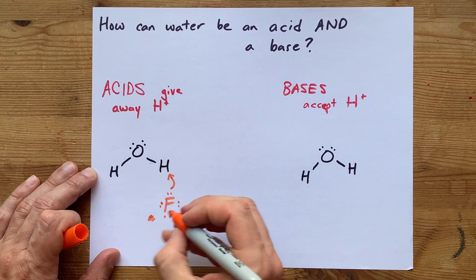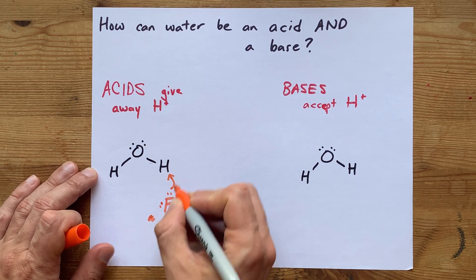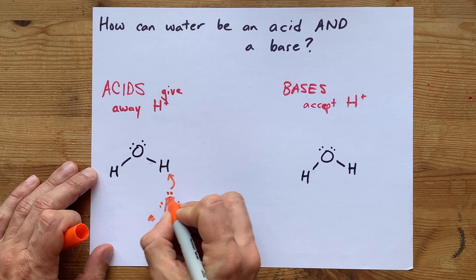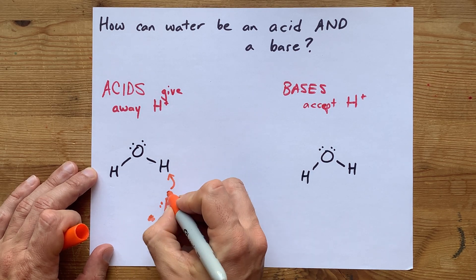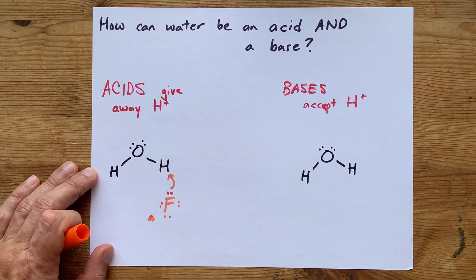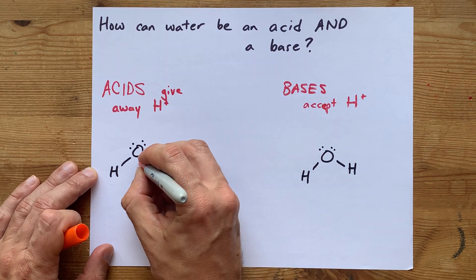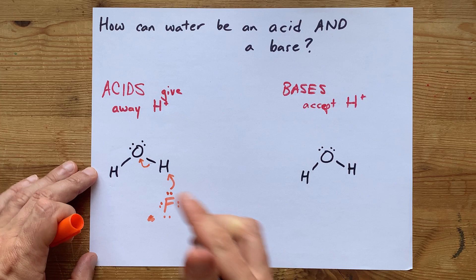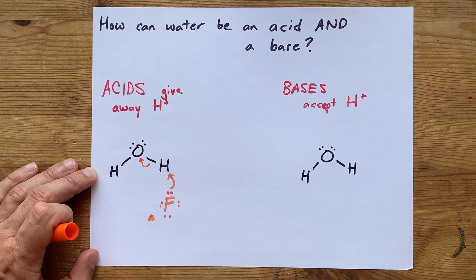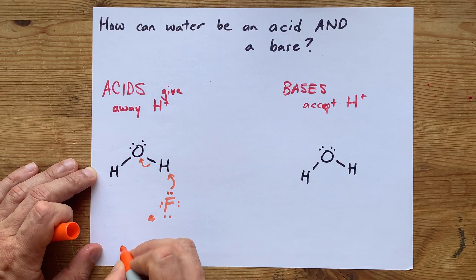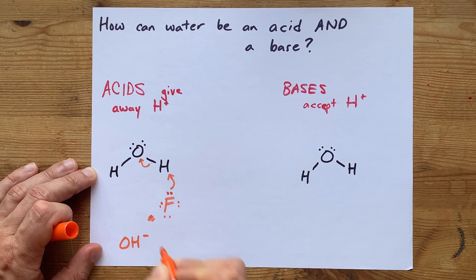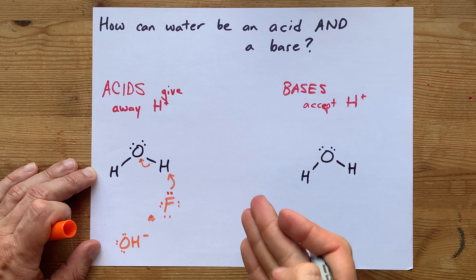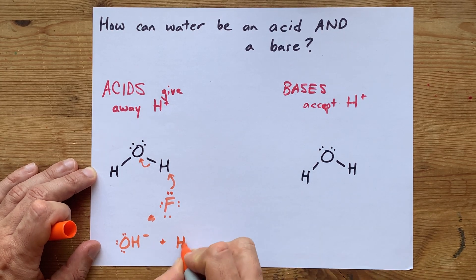What I mean is that the lone pairs on this F are attractive to that H. And so the lone pair that F has, the H is willing to be connected to, giving this lone pair back to the water. The result of H2O plus F-minus can be an OH-minus ion, that's water without one of the Hs, as well as HF.